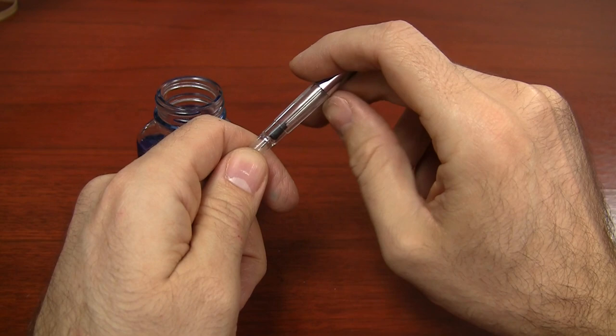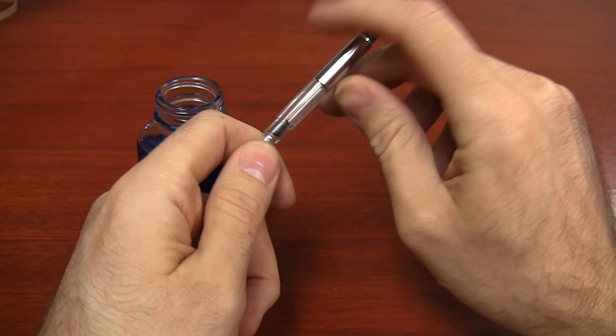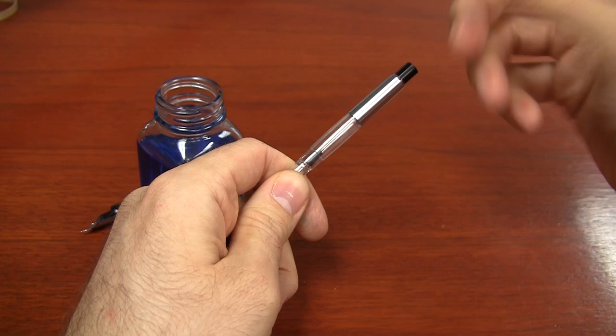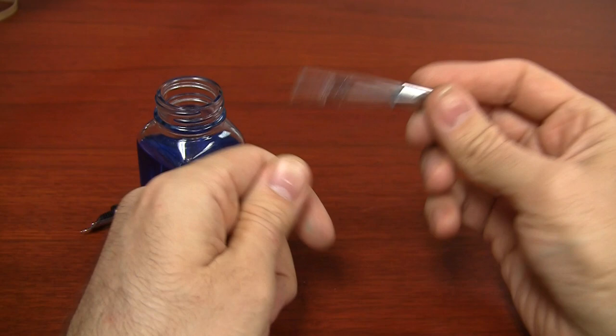If you have any vacuum filling pen, like a TWSBI VAC 700 or a Pilot Custom 823, it's going to operate in a very similar principle. Now they have different mechanisms, but the whole idea behind creating pressure, releasing the pressure instantly to create a vacuum, that's how vacuum fill pens work. So for all intents and purposes, this is a vacuum filling converter.